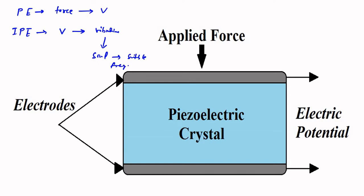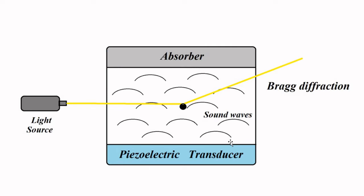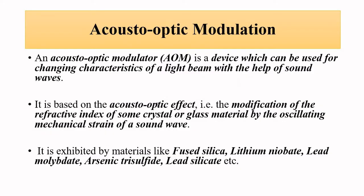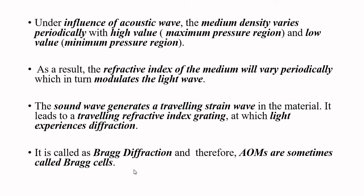That is achieved by the piezoelectric transducer, which produces the sound waves. When light from the optoelectronic source — which can be a light emitting diode or laser — passes through the material and comes in contact with the sound waves, it suffers scattering and diffraction. Such a type of diffraction is called Bragg diffraction. That is why acousto-optic modulators are also called Bragg cells.